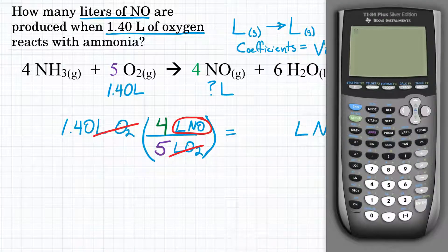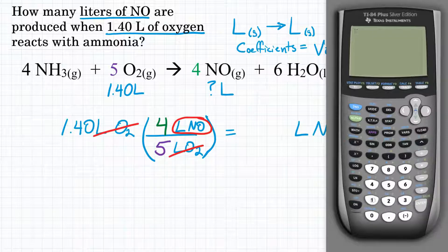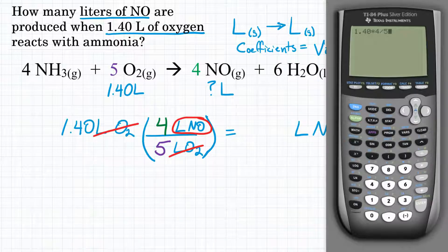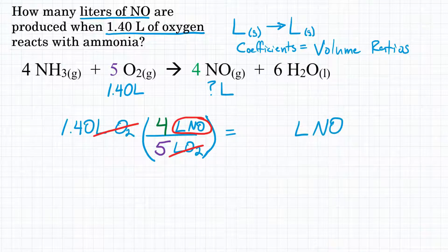In your calculator, put 1.40 and multiply that by 4 over 5, or multiply by 4 and divide by 5. Hit equals, and we get 1.12—that's our answer.